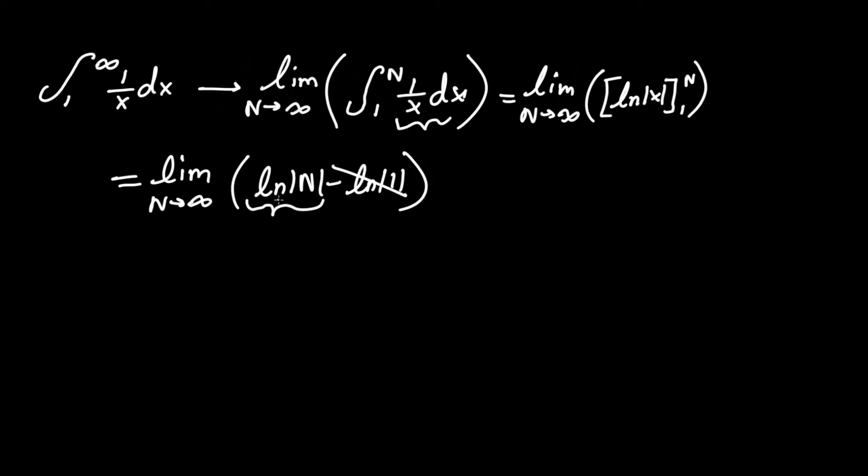And of course, you can't have ln of infinity. That is not a real number because we don't know when it approaches—essentially it just goes up to infinity. So we can say that this does not exist, and therefore, because of that, this integral is divergent, in which it does not converge to one specific value.